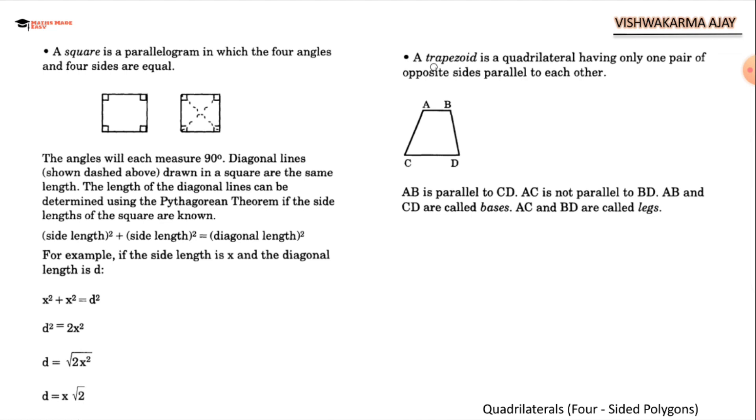Last one is interesting. It is trapezoid. It is a quadrilateral having only one pair of opposite sides parallel to each other. AB and CD are parallel to each other. But other pair of opposite lines are not parallel to each other. AB is parallel to CD. AC is not parallel to BD. AB and CD are called bases.